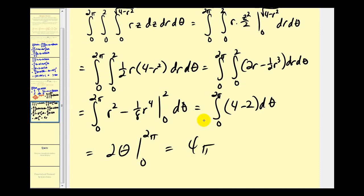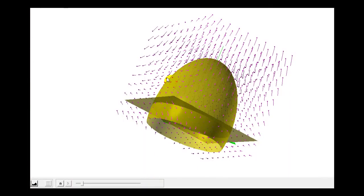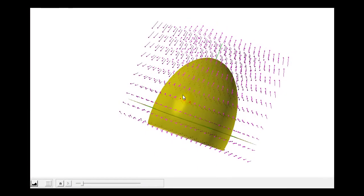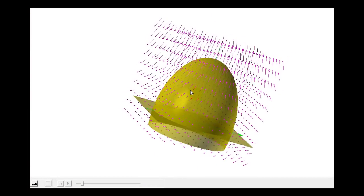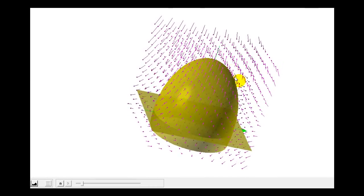Looks like we have four pi for our flux. We have a positive value, which means the total divergence of the vector field in this solid region is outward, as well as the flow across the surface.